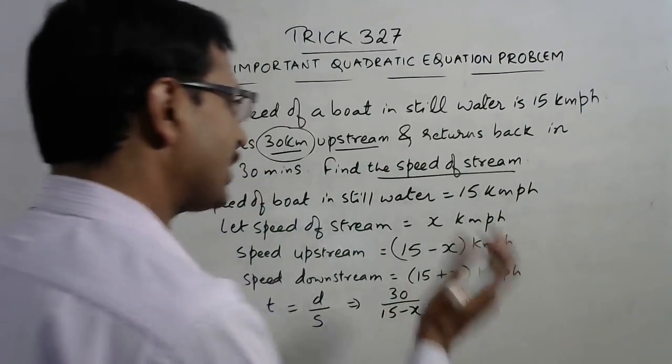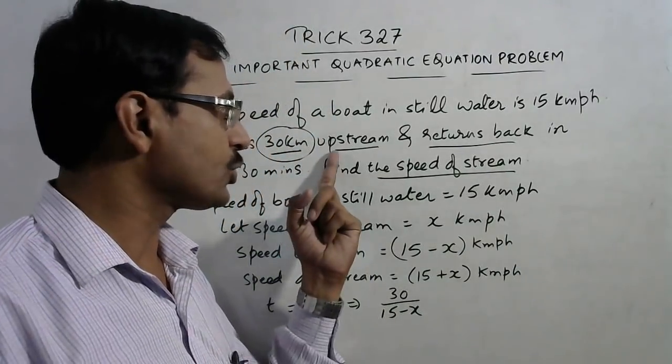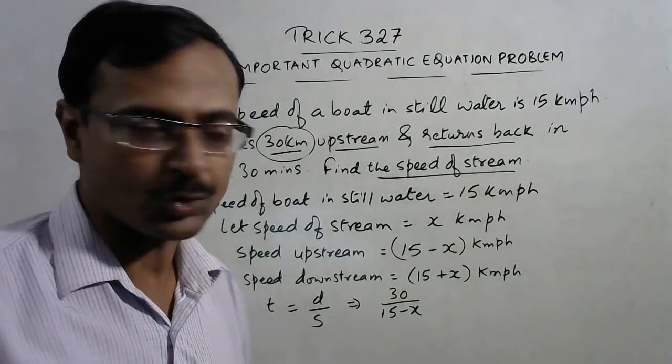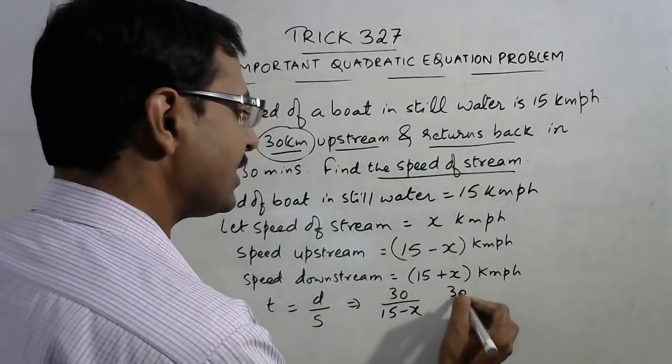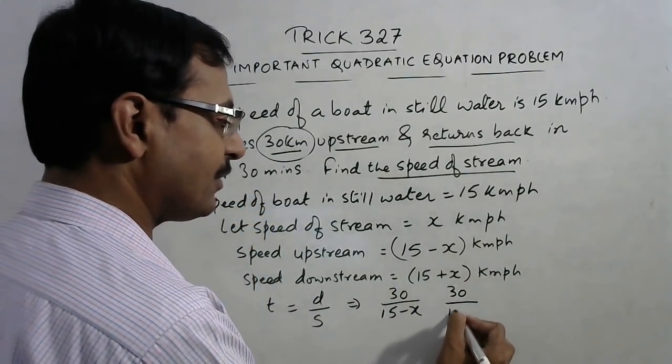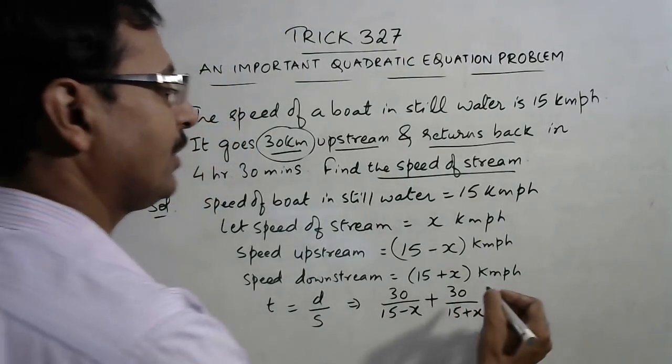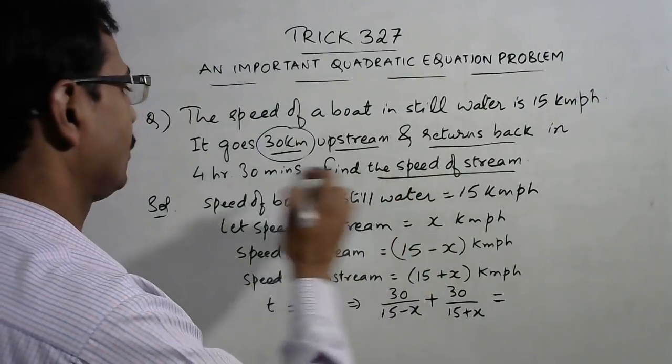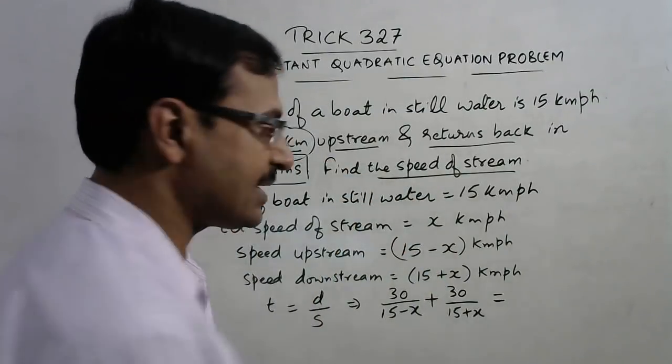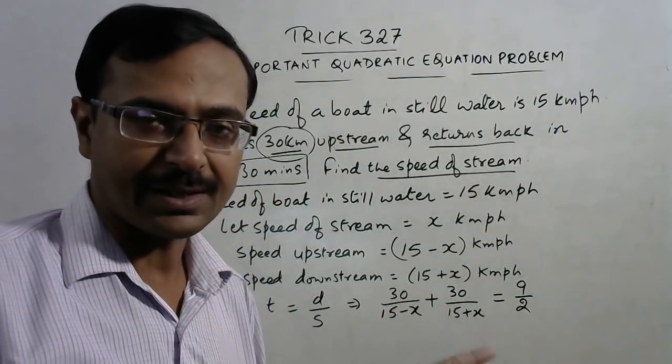Similarly, whenever the boat moves downstream, see it returns back. So when it returns back, while going the motion is upstream motion, so while coming back it has to be downstream motion. So 30 again, the distance is same because it is returning back. Speed downstream is 15 plus x, and the total time given in the question is 4 hours 30 minutes, 4 and a half hours, which is 9 by 2 hours. So this is the equation we need to solve to get to our answer.